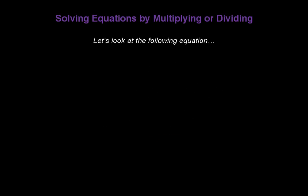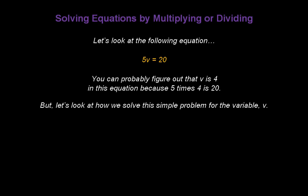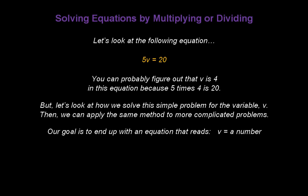Let's look at the following equation: 5 times v equals 20. Now you can probably figure out that v is 4 in this equation because 5 times 4 is 20. It's very simple. But let's look at how we solve this simple problem for the variable v. Then we can apply the same method to more complicated problems.